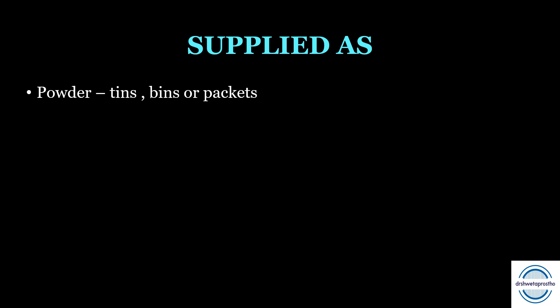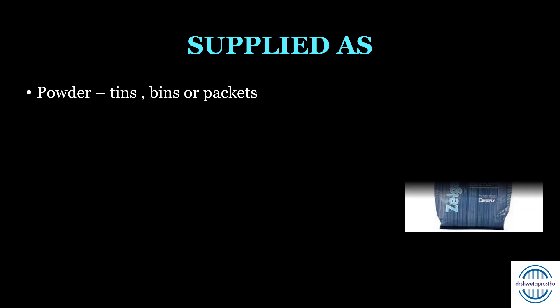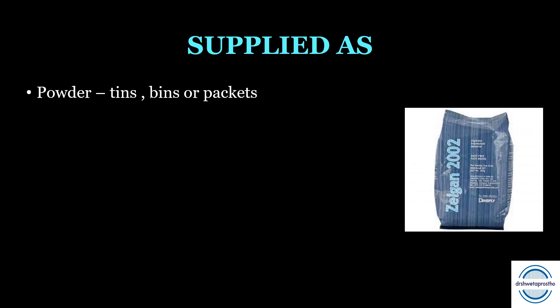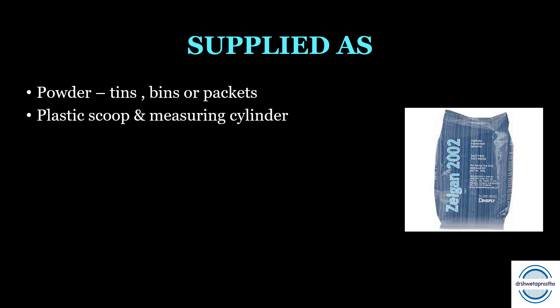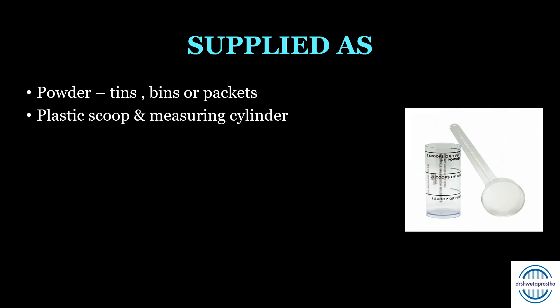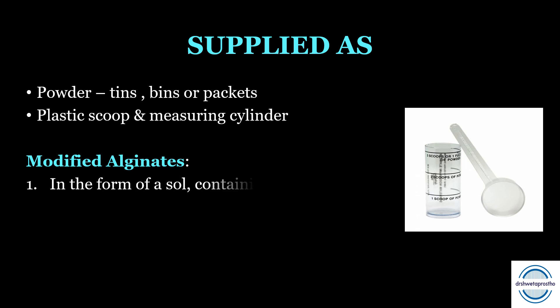Alginates are mainly supplied in powder form, packed in bulk packaging like tins, bins, or sachets. This is the most common impression material used in orthodontics and for partially edentulous patients. A plastic scoop is supplied for dispensing the powder and a plastic cylinder for measuring water.